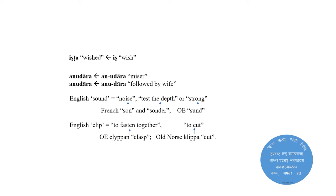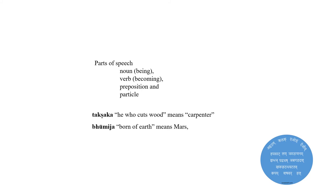In English, the word 'clip' has two opposite meanings: to fasten together and to cut. The word derives from two different sources — Old English clip (clasp) and Old Norse klippa (cut). Yaska also discusses philology, the origin of languages, and parts of speech.